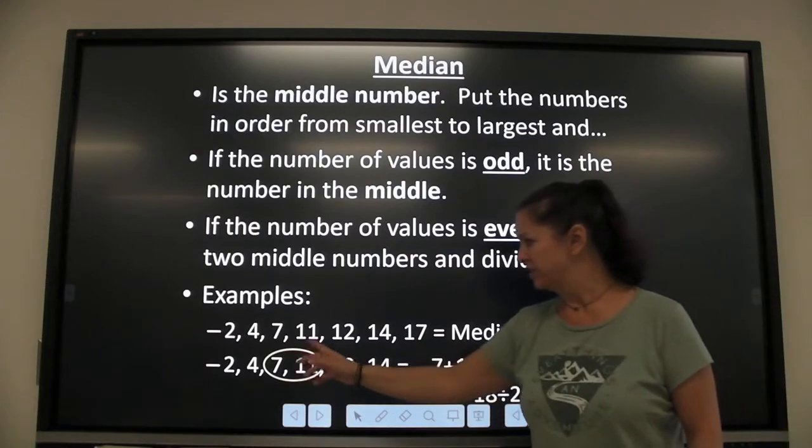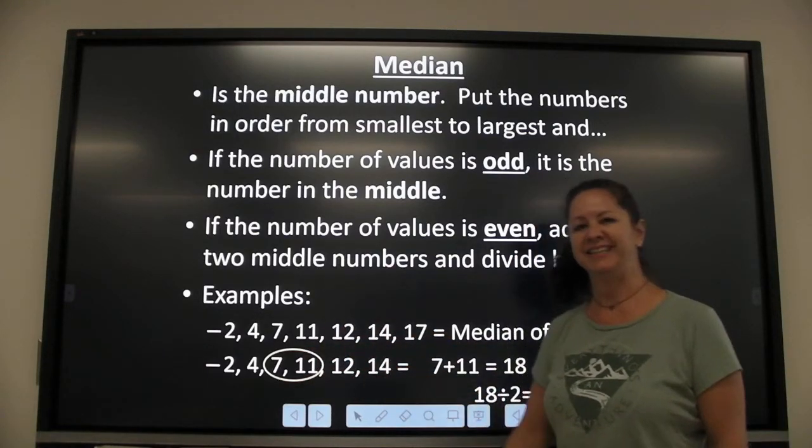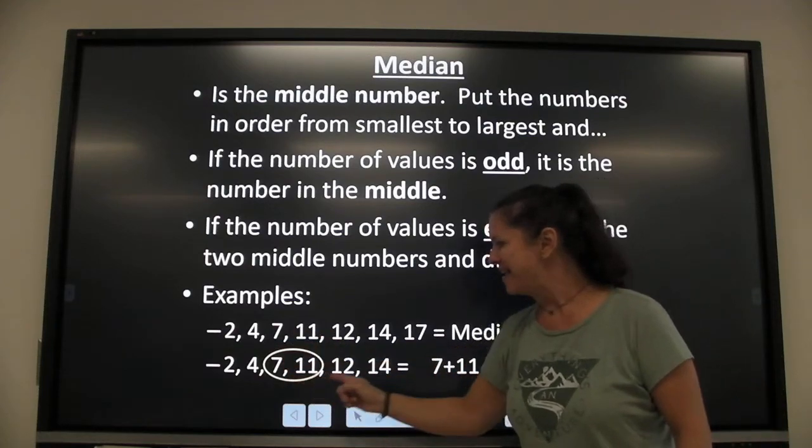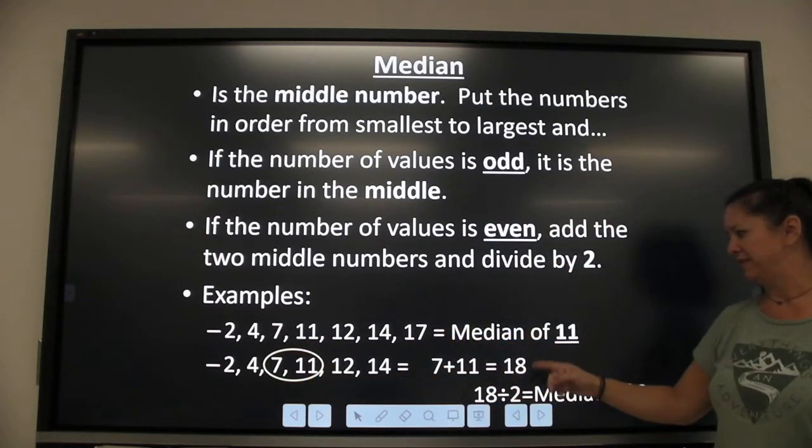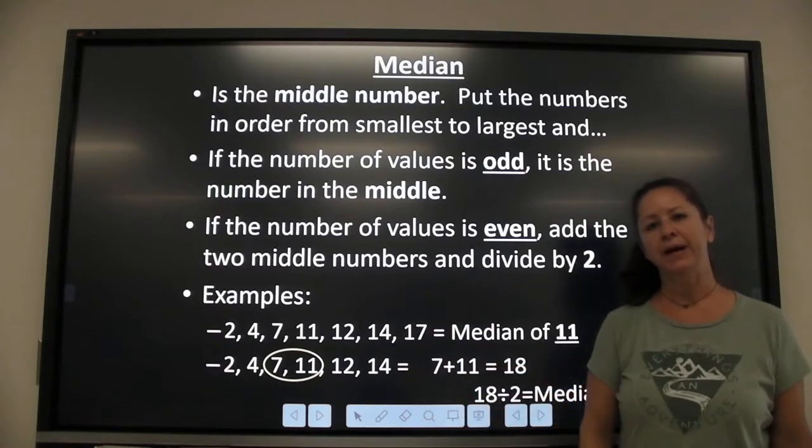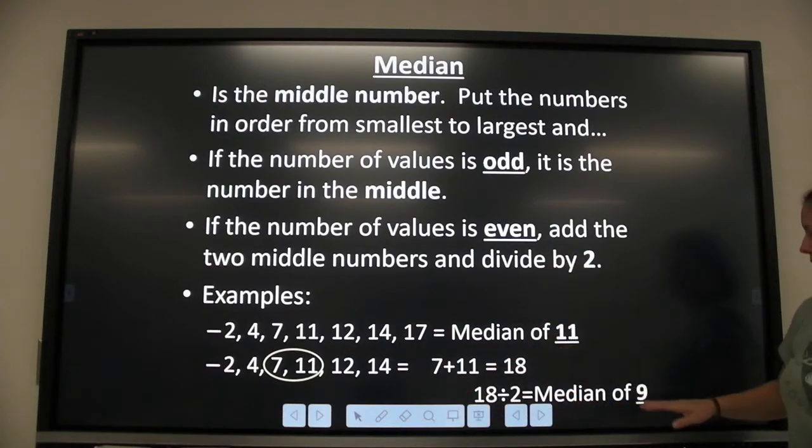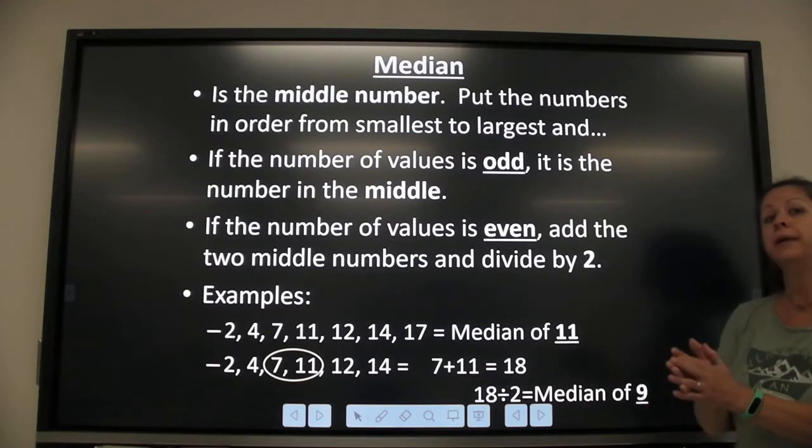But if it's 2, 4, 7, 11, 12, and 14, there's 6 numbers here. So you have to add the 2 in the middle. 7 plus 11 is 18. Divide it by 2. Your median then is going to be 9. So that's how you find the median. It's literally in the middle.